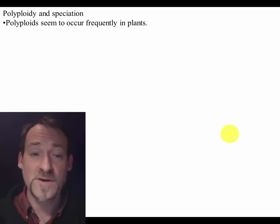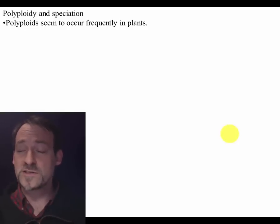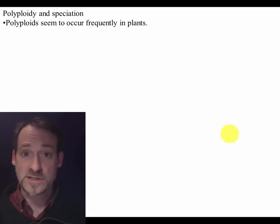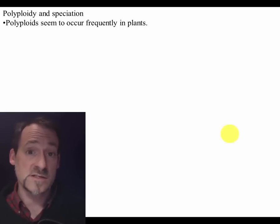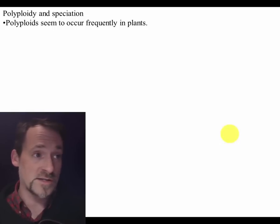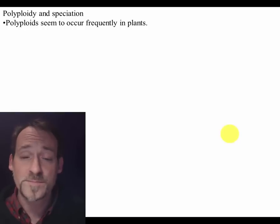The effect of this is that when polyploidy occurs — when you suddenly get one individual that has had its genome doubled — it's a new species. It becomes instantly reproductively isolated from the individuals and the species that it just came from.